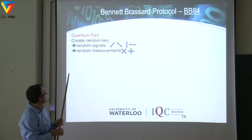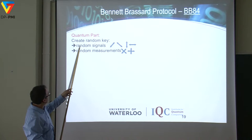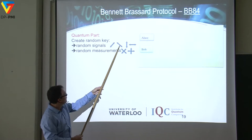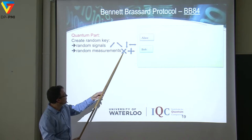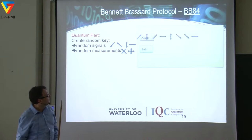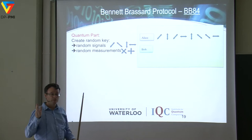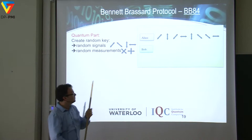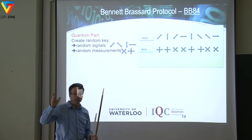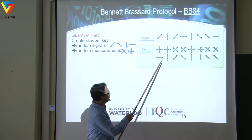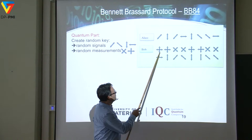Let's quickly run through the Bennett-Brassard BB84 protocol. For the quantum transmission, Alice creates random signals in polarization states such as plus/minus 45 degrees, horizontal, and vertical. Bob then does random measurements in either the diagonal basis or the horizontal-vertical basis. Alice randomly transmits polarized photons, choosing independently a different setting for each one. Bob also randomly chooses a certain polarization measurement and gets an outcome depending on his respective measurement.